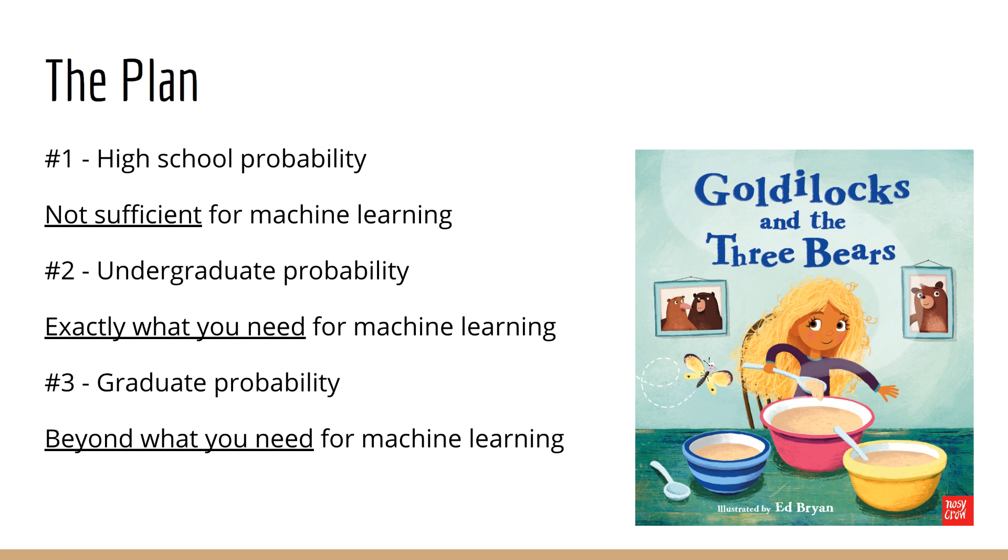So this is our plan. The three levels we're going to talk about are number one, high school probability. Typically this is not sufficient for machine learning. Number two, undergraduate-level probability. Typically this is exactly what you need for machine learning. And number three, graduate-level probability. Typically, this is beyond what you need for machine learning. So let's dive into what each of these means.